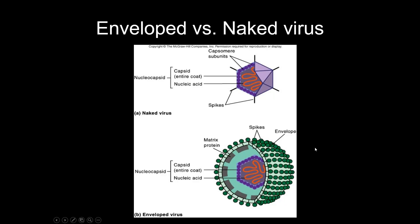Enveloped versus naked viruses: a naked virus just has the capsid and the nucleic acid — that's the nucleocapsid and that's all. Some viruses get an envelope around them made out of lipid bilayer. If there's an envelope outside of the capsid, it's an enveloped virus; if not, it's a naked virus. Counterintuitively, enveloped viruses are easier to kill because lipid layers are easier to break up than protein coats. So naked viruses are more resistant to germicides.